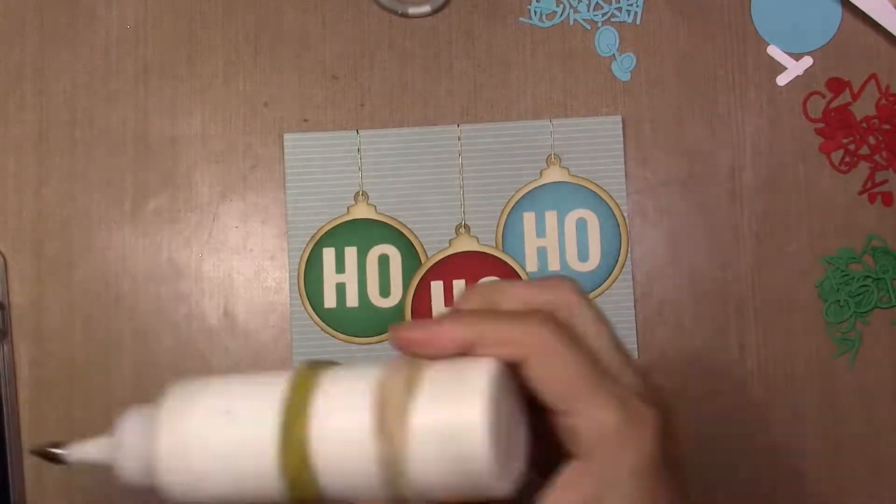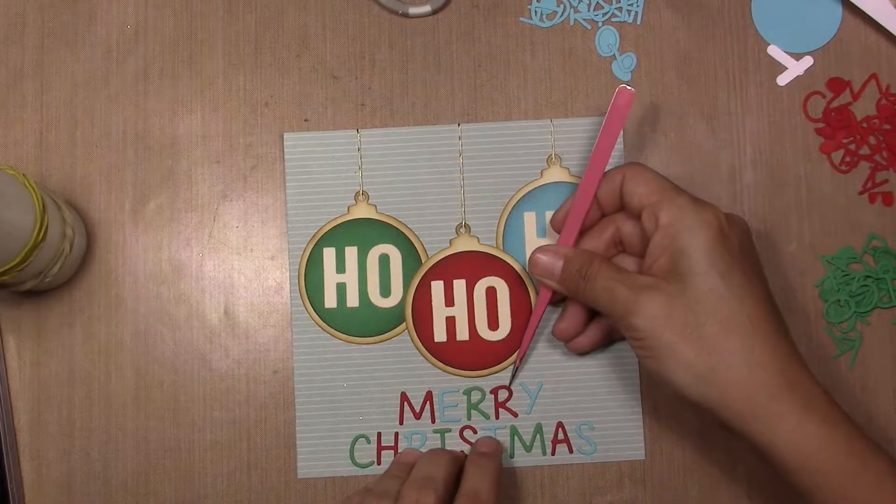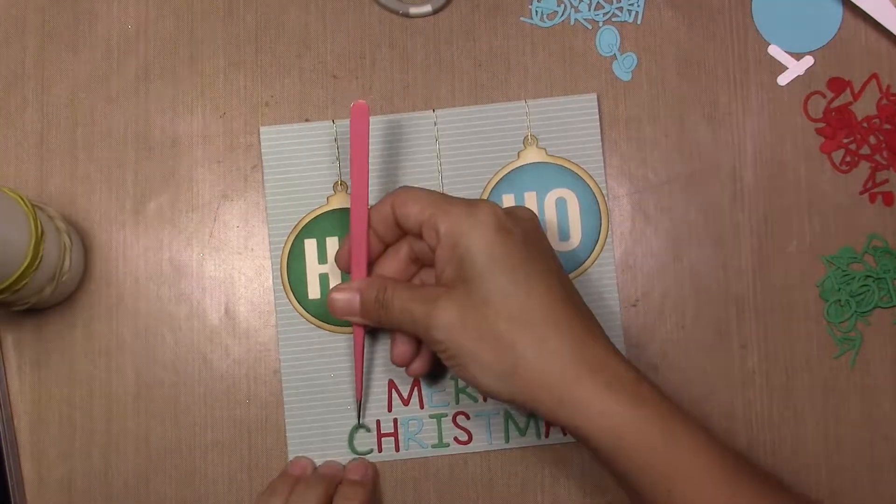After I finish gluing down my letters I'm going to apply Wink of Stella just on the letters on the ornaments.